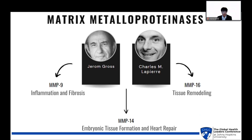Now, on to matrix metalloproteinases, or MMPs. MMPs are critical for tissue remodeling. Discovered in 1962 by scientists Gross and Lapeer, these zinc-dependent enzymes play vital roles in physiological and pathological processes. In my presentation, I'll focus on three MMPs: MMP9, 14, and 16. MMP9 is involved in inflammation and fibrosis in CVD. MMP14 aids in embryonic tissue formation and heart repair post-myocardial infarction, and MMP16 also plays crucial roles in tissue remodeling.